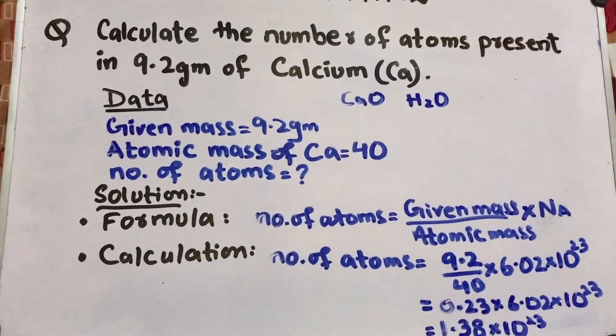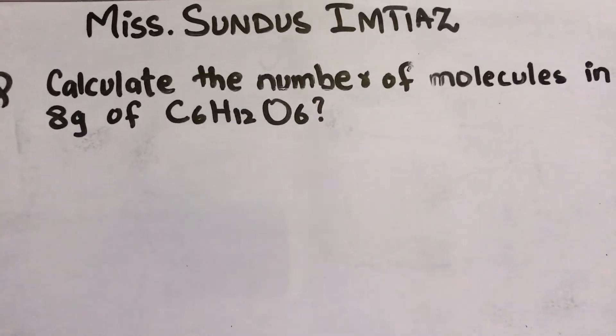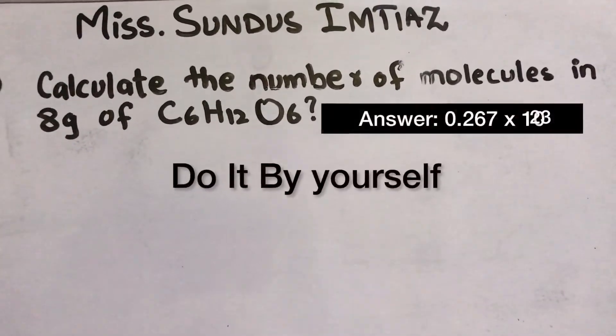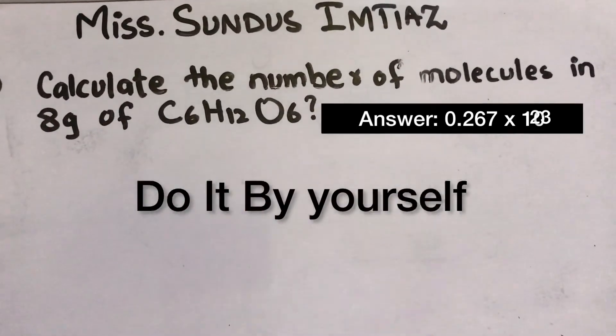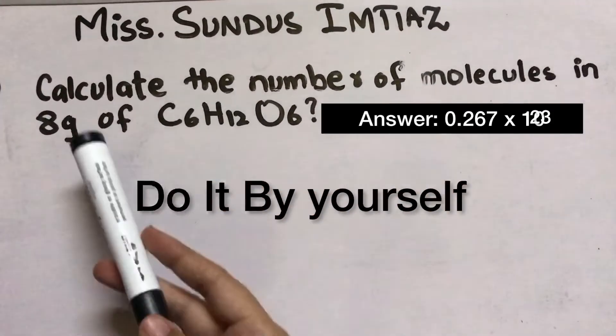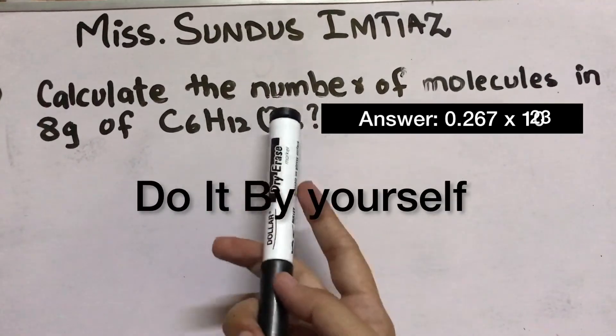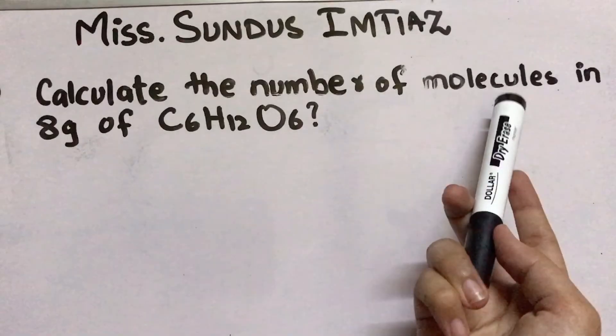I hope you get the answer. So this is question number 2 of the same topic. Now here is a little bit change in the question. Let's see what are the changes. Now calculate the number of molecules in 8 grams of C6H12O6, which is the formula for glucose. So you have to find the molecules.